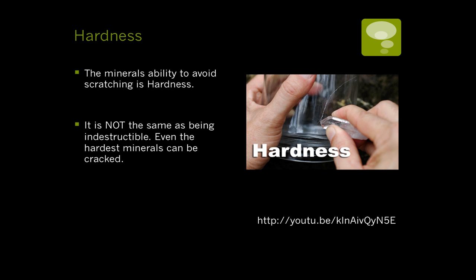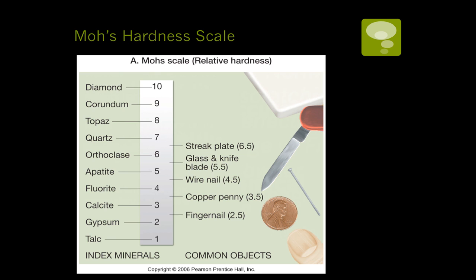Hardness is how well a mineral resists being scratched. It is not the same as being indestructible — even the hardest mineral, such as diamond, can be destroyed simply by tapping it with a hammer. If you go to the YouTube site, you can watch a video of a kid smashing his mom's diamond on the counter. Do not do that at home. We rank minerals on Mohs hardness scale, from 1 being talc all the way to diamond being 10.